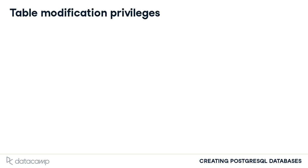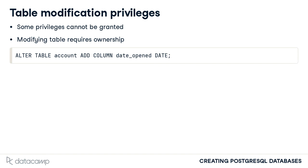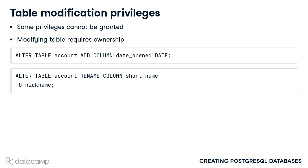Before we end, I would like to stress one limitation of the GRANT command. While many of the privileges on a table can be granted directly to a role by the owner, certain commands can only be executed by the table's owner. For example, modifying the structure of a table requires ownership of the table. The FIN user would not be able to issue this command to add a column to the table, and the FIN account could not rename the short_name column to become nickname.